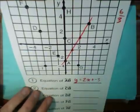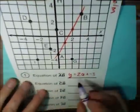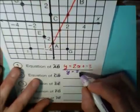So one way of writing the equation would be y equals 2x plus negative 3 or y equals 2x minus 3.